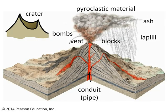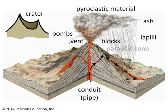The only other feature on this picture we haven't discussed is a little sideways conduit bringing lava up to a small vent on the side of the volcano. That little vent is referred to as a parasitic cone, and the material issuing from that parasitic cone is, of course, a lava flow.